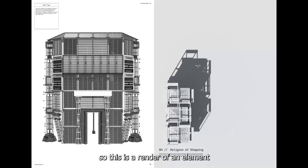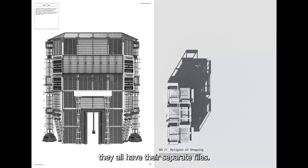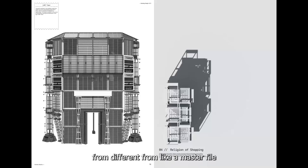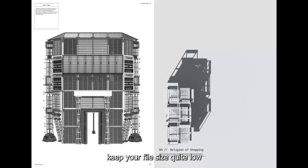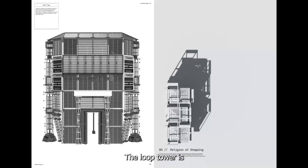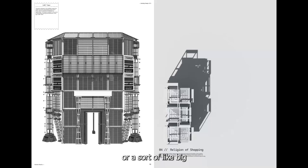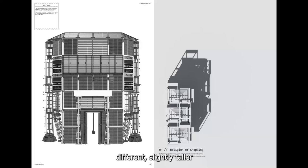This is the LARP tower — a render of an element I created. All of these 3D models have their separate files. For example, the LARP tower itself is a separate 3D file, pulling in elements from the master file. This helps keep file size quite low, makes renders faster, and keeps things separate so you don't override anything by accident. The LARP tower is essentially like an anchor corner — in a shopping mall you have an anchor store, usually a supermarket or a bigger retail store. I wanted this element to be quite prominent on one of the corners of the site, so I designed it slightly taller than the rest of the modules, just to emphasize that this is the shopping mall.